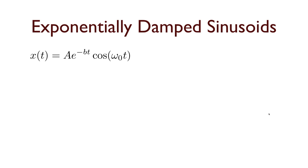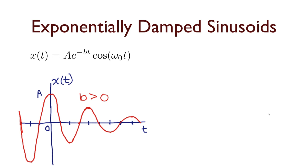And we can get an exponentially damped sinusoid by multiplying a sinusoid times one of these exponential signals. So, as I've shown here, I've got x(t) equals A e to the negative bt times cosine omega naught t. And if I were to graph that, you can see that I have this sinusoidal oscillatory behavior, but there's an exponential decay, in this case because b is greater than 0, on top of that sinusoid.